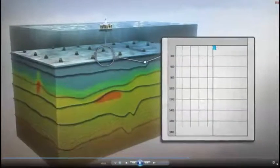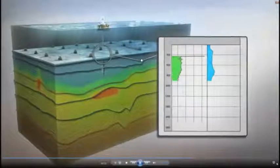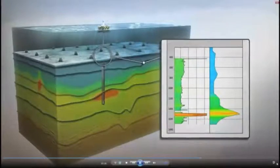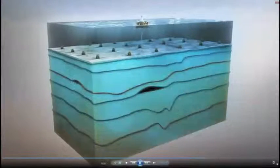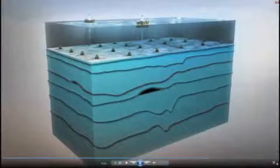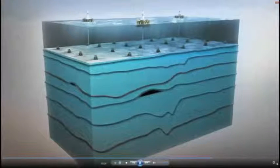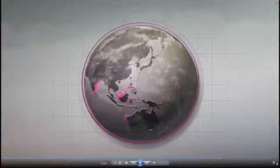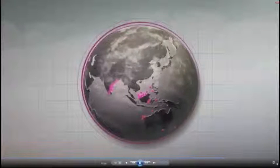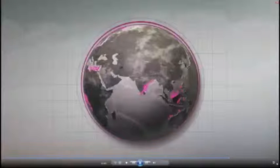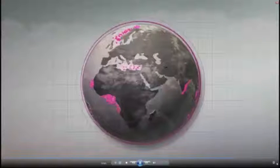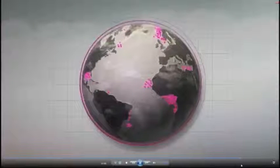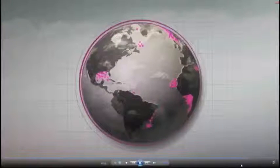CSEM results can be calibrated when well log resistivity measurements are available. This in turn provides improved confidence in interpretation. In mature areas where the reservoir saturation and porosity is known from well logs, CSEM data can also be used to estimate hydrocarbon distribution and total volumes. EMGS has performed over 500 surveys since 2002 to reduce exploration risk and improve drilling success rates across the world's mature and frontier basins.